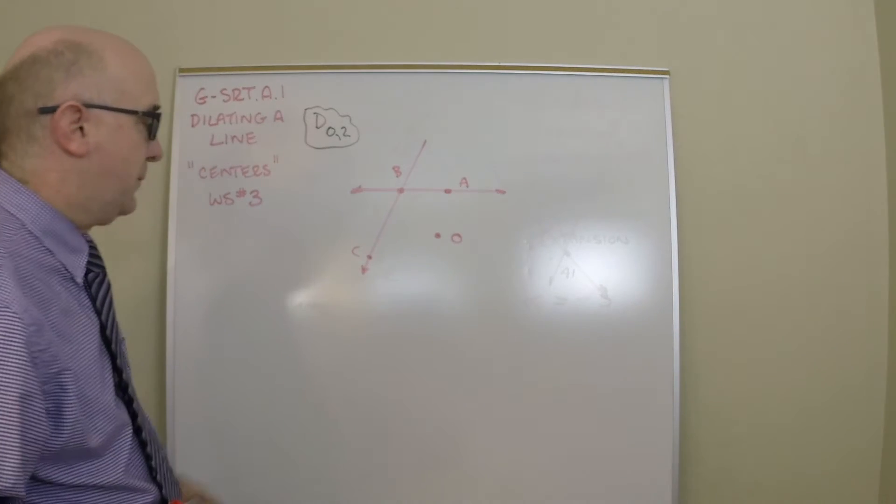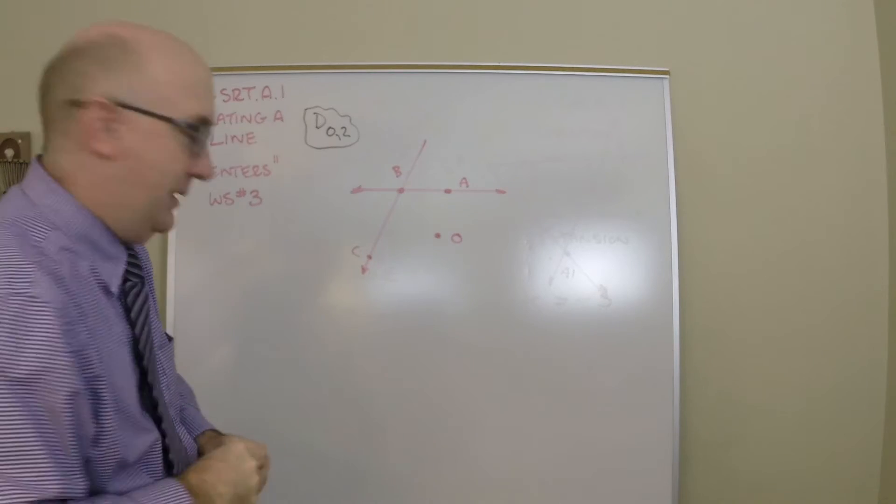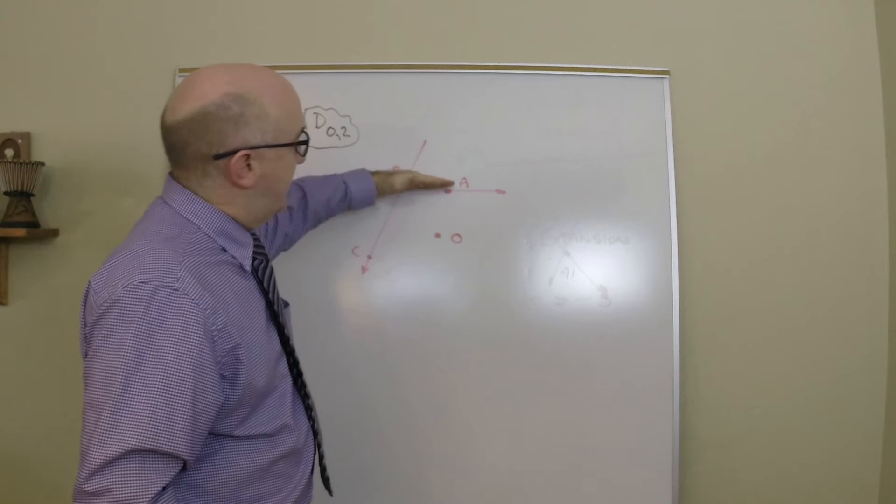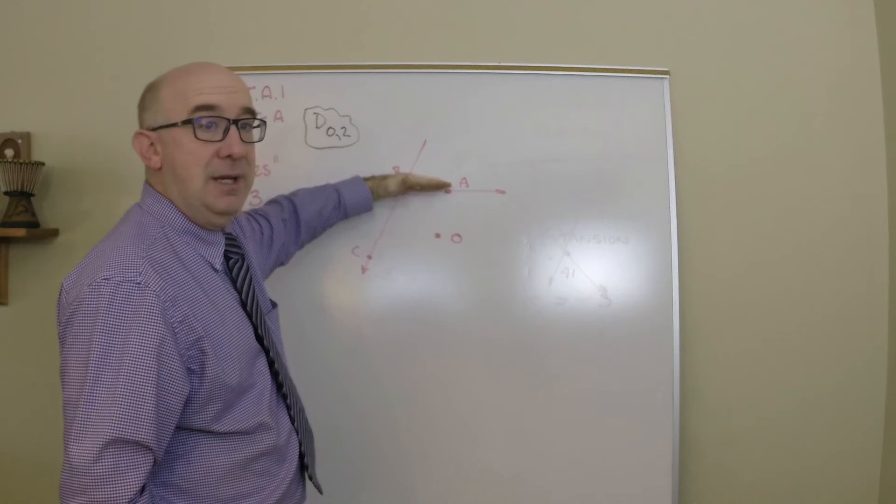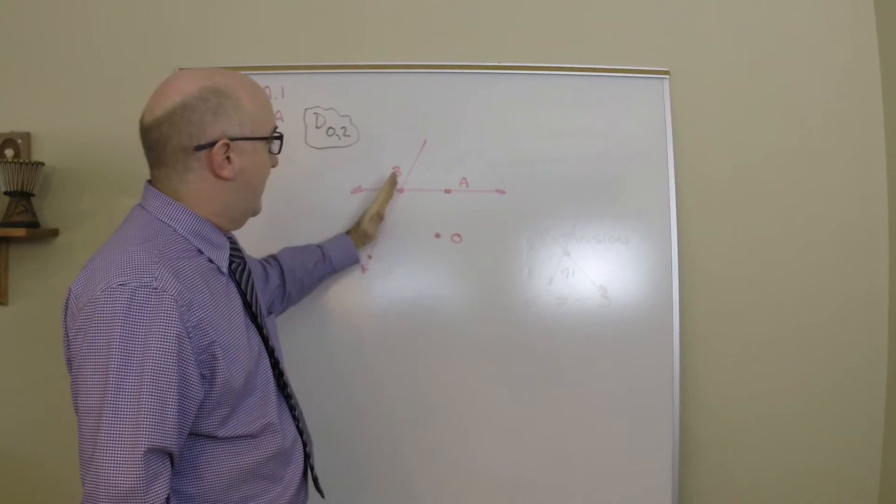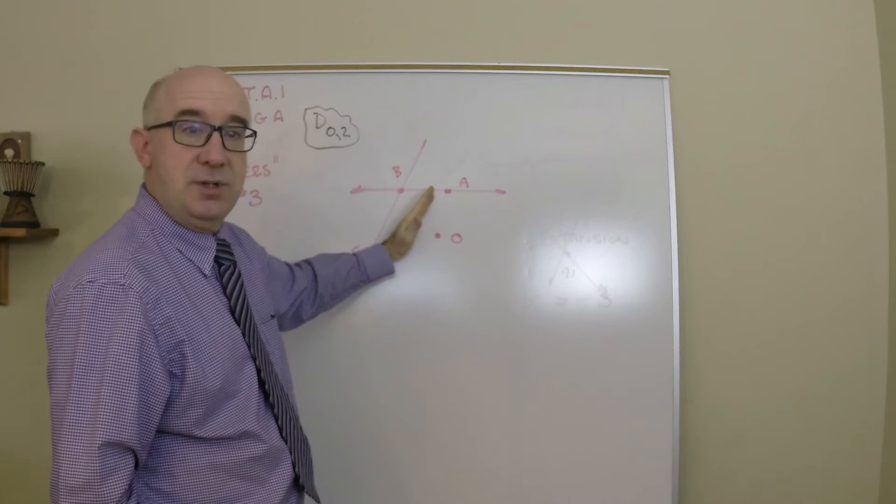And let's say we dilate this by a half from O. What that's going to do is it's going to move line AB closer to O, because it's not on here, and line BC is going to come closer as well.